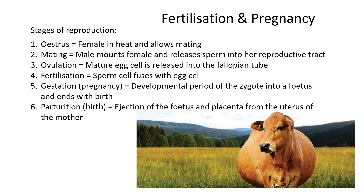In this lesson we'll be looking at fertilization and pregnancy. First, let's talk about the different stages of reproduction. Before we get to the fertilization stage, certain steps have to happen between a cow and a bull. There are broadly six steps or stages of reproduction.